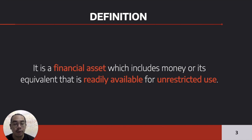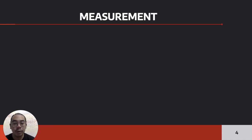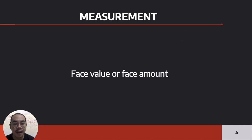Take note: number one, it is a financial asset, and number two, it is readily available and it is unrestricted. So once it is restricted or it is not readily available for use, then it cannot be considered as cash. We measure cash at face value or the face amount. If it is denominated in foreign currency, we translate the amount using the closing rate at the end of the year.